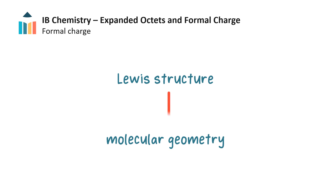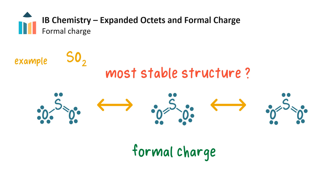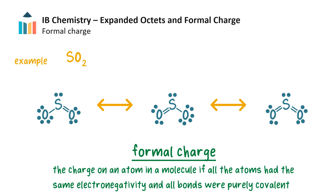So far we have used Lewis structures to deduce molecular geometry. However, certain compounds such as sulfur dioxide have more than one possible Lewis structure because they display resonance, and in one case sulfur has an expanded octet. To deduce which is the preferred structure and considered the most stable, we use a concept called formal charge. Formal charge is the charge on an atom in a molecule if all atoms had the same electronegativity and all bonds were purely covalent. It helps us understand how electrons are distributed amongst the atoms in a molecule. Ideally, the best Lewis structure has the smallest possible formal charge on each atom, with charges as close to zero as possible.